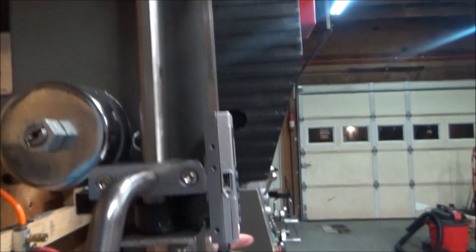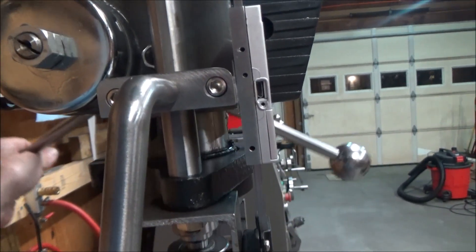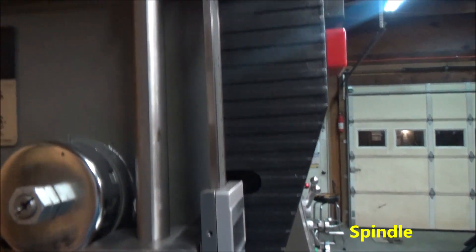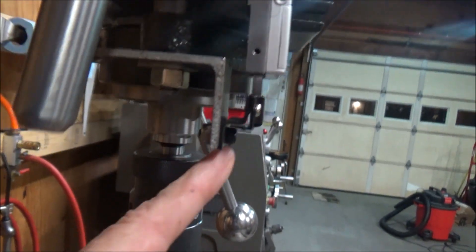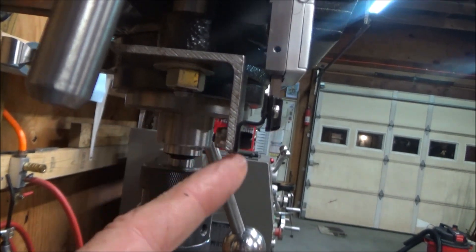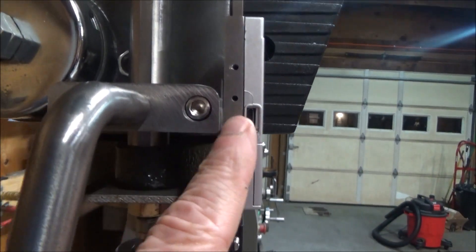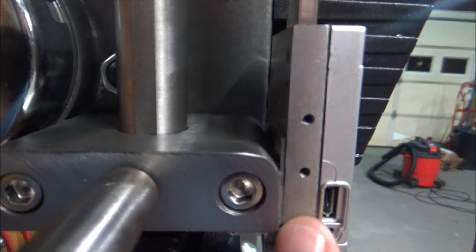It has this rod here that's connected to the column. It has an adjustable stop here. And the DRO is just connected to this piece of angle iron here and is connected here with double sided tape.